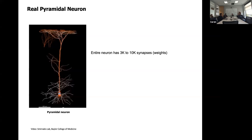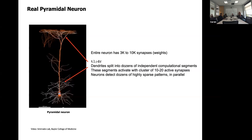This is actually a picture of a pyramidal cell from the hippocampus. One researcher counted and got 30,000 synapses on that particular cell. The TL;DR here is that all these dendrites are split into dozens of independent computational segments, and these segments activate with clusters of about 10 to 20 active synapses — which is really tiny. Essentially, these neurons are detecting dozens of highly sparse patterns in parallel, and these are integrated in different complex ways.